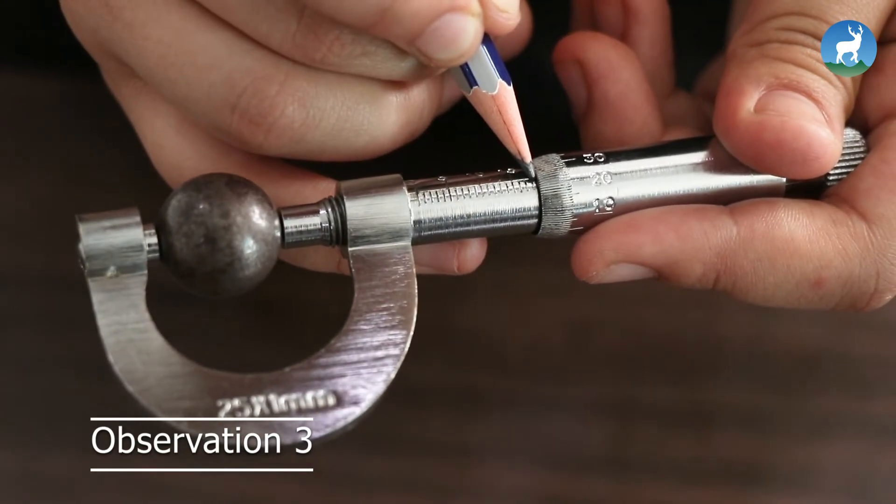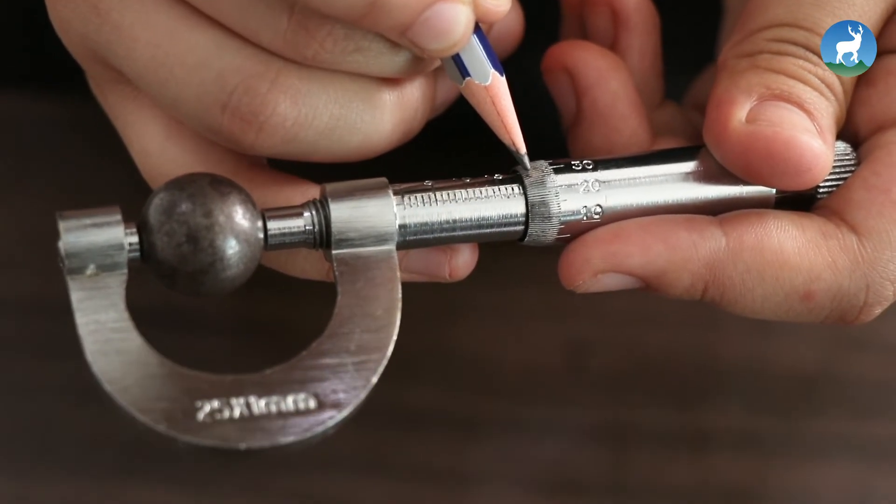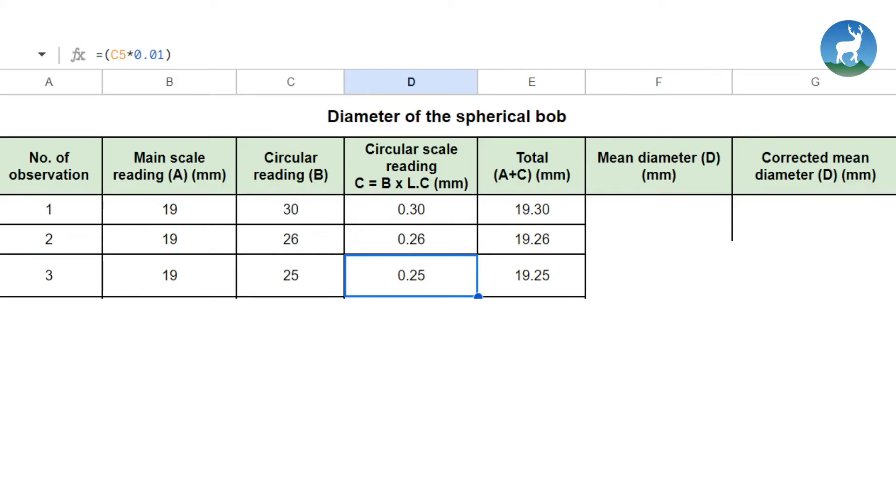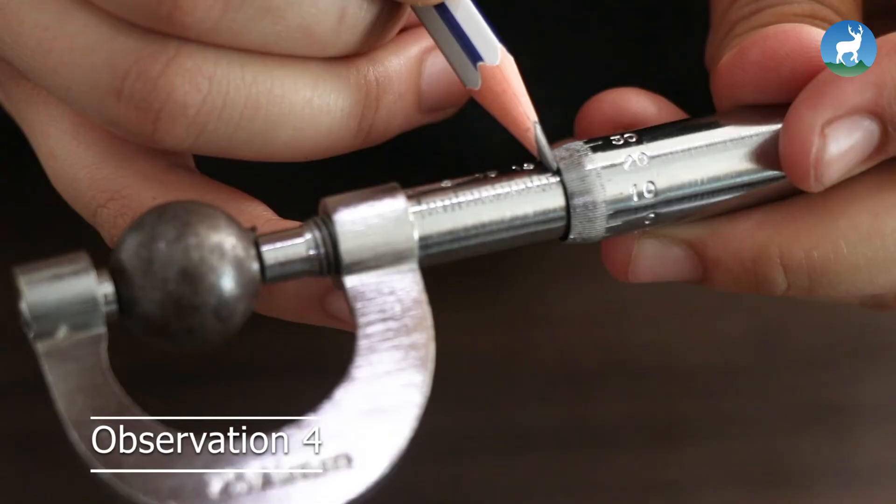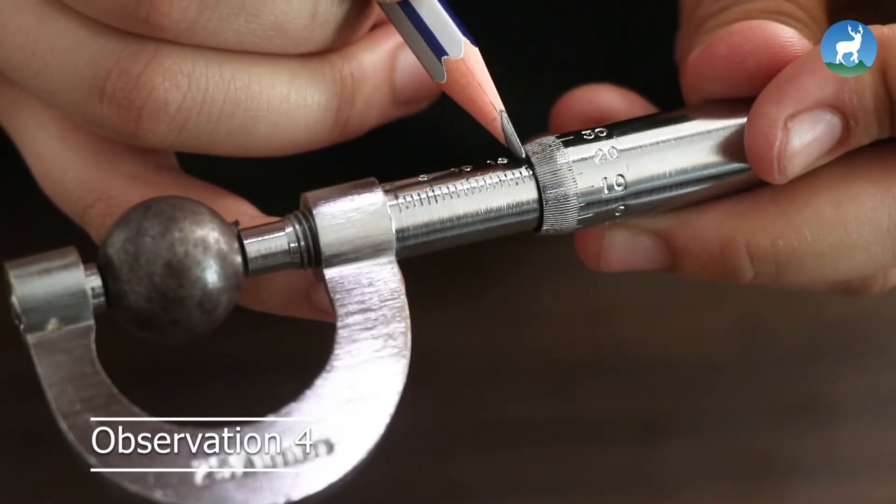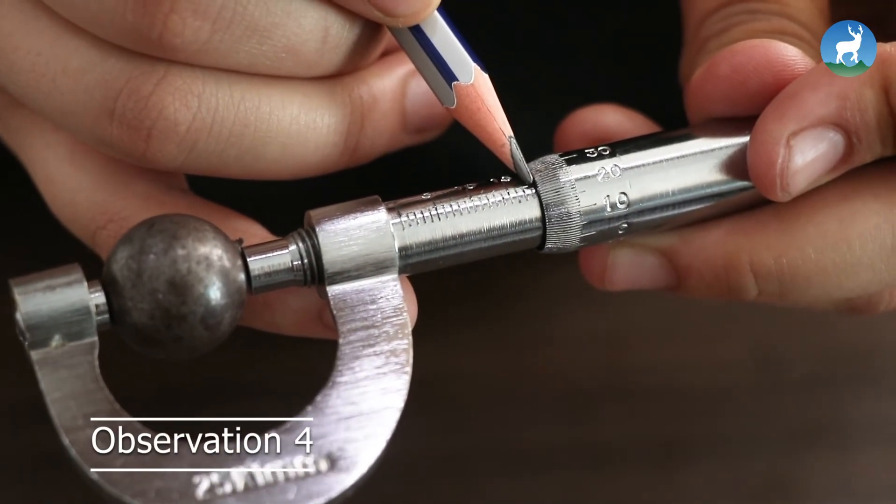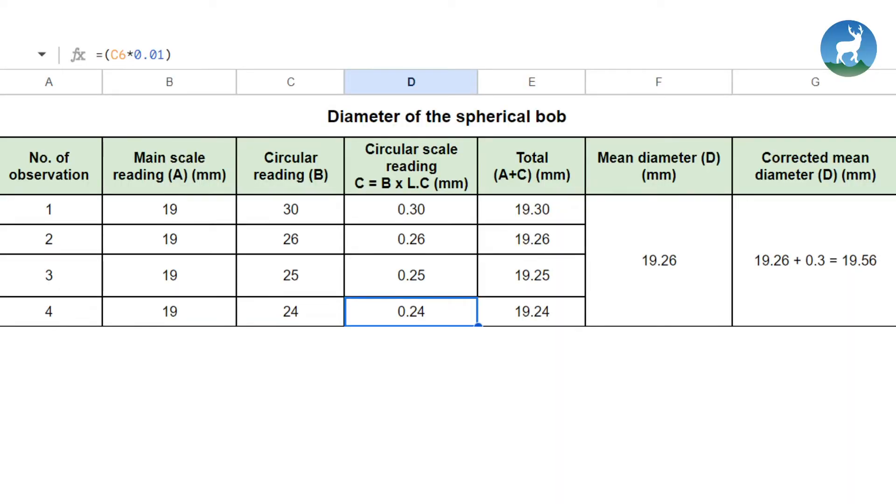For observation 3, mean scale is 19, circular reading is 25, value of CST reading is 0.25 and total is 19.25. For observation 4, mean scale is 19, circular reading is 24, value of CST reading is 0.24 and total is 19.24. The mean diameter is 19.26 mm.